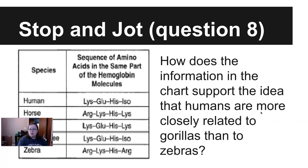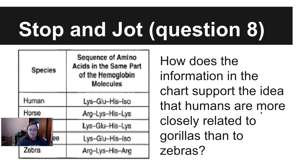You're going to stop, pause, and answer question 8: How does the information in this chart support the idea that humans are more closely related to gorillas than to zebras? How does this chart show that? Go ahead and pause and answer question 8.